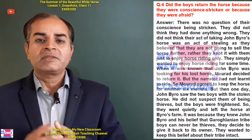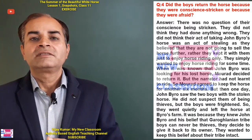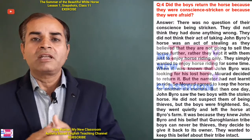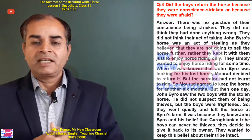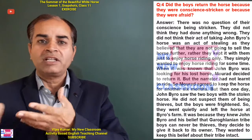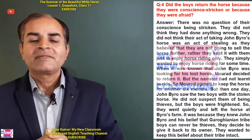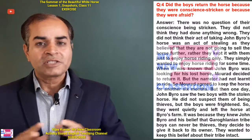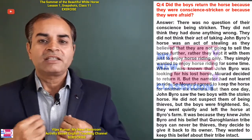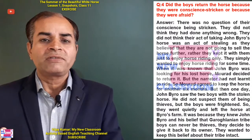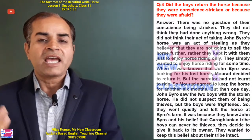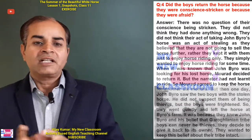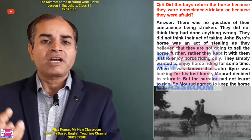There was no question of their conscience waking up, because they had not actually stolen it. Aram had also said: stealing a horse for riding is not equal to stealing money. We didn't steal it to sell — we just kept it for a few days of riding, and we will return it. They did not think they had done anything wrong, so there was no question of their conscience being stricken. They did not think their act of taking John Byro's horse was an act of stealing.